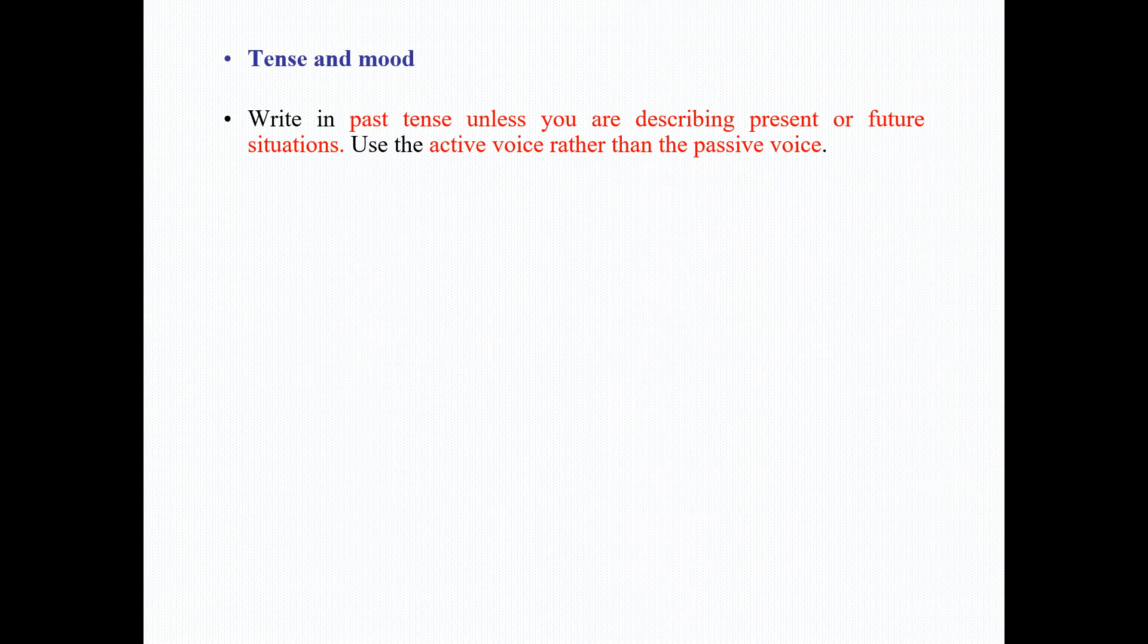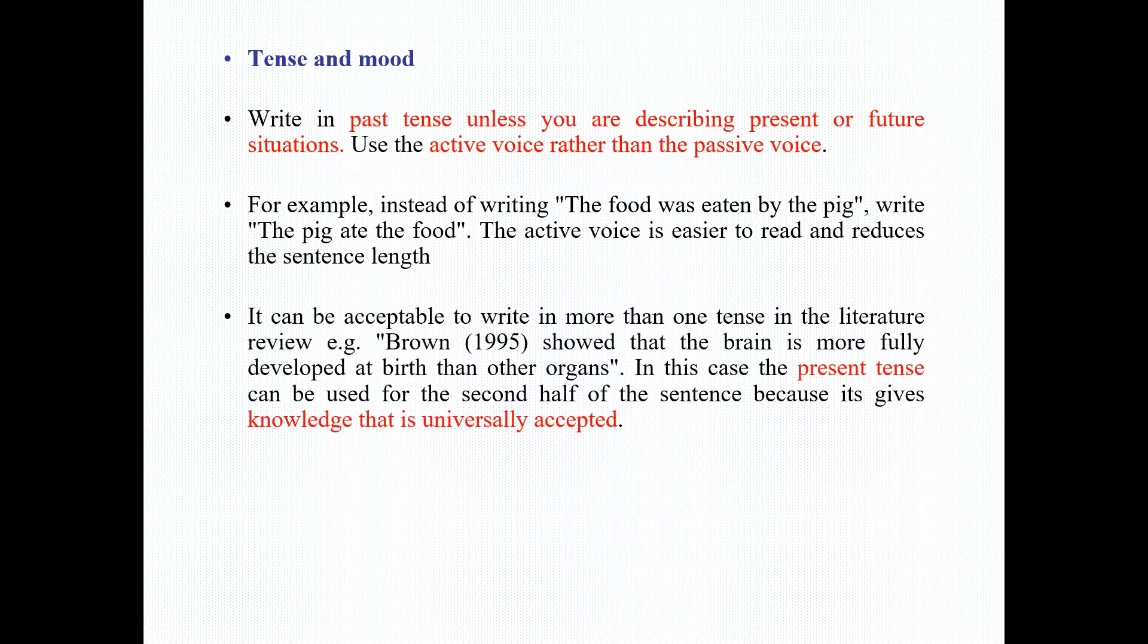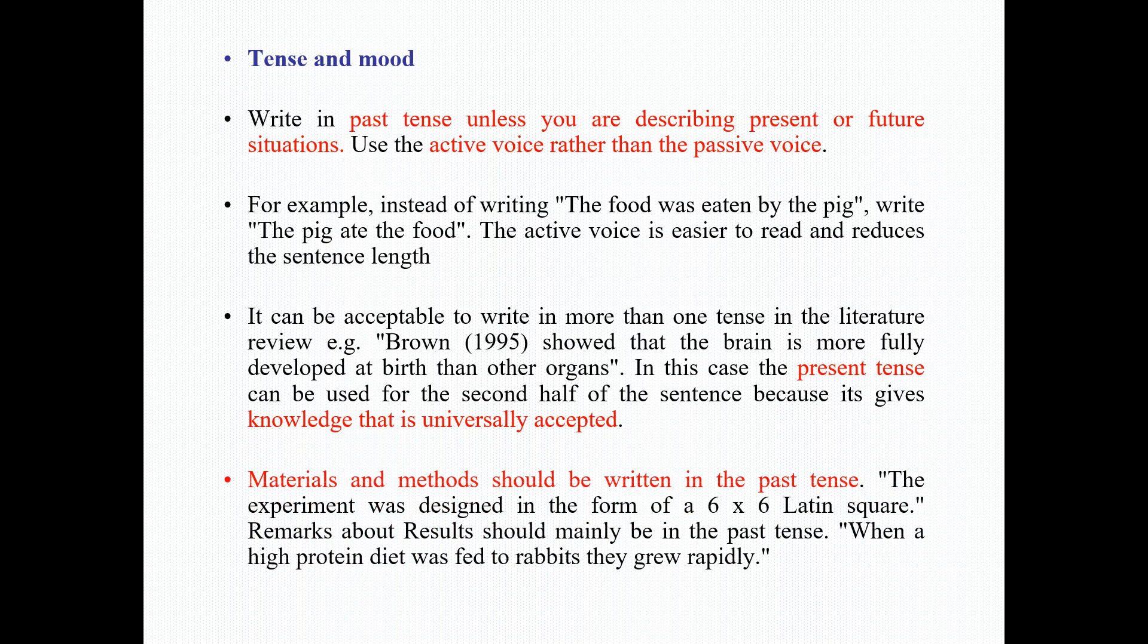For tense and modes, write in past tense unless you are describing present or future situations. Use the active voice rather than the passive voice. The active voice is easier to read and reduces sentence length. It can be acceptable to write in more than one tense. In literature review, for example, 'Brown showed that the brain is more fully developed at birth than other organs.' The present tense can be used for the second half because it gives knowledge that is universally accepted. Material and methods should be written in past tense, such as 'the experiment was designed in the form of a six by six Latin square.'